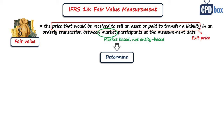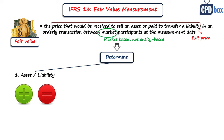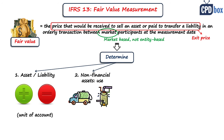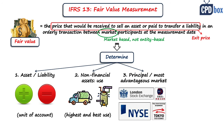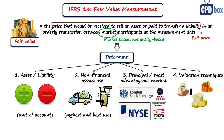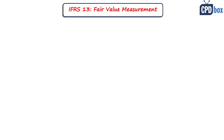Fair value measurement requires an entity to determine four key factors. First, the particular asset or liability being measured, consistent with its unit of account — are you measuring a group of assets or a single asset? Second, for non-financial assets only, the valuation premise appropriate for measurement — the highest and best use. Third, the principal or most advantageous market. Fourth, the appropriate valuation technique given available data and the fair value hierarchy level.